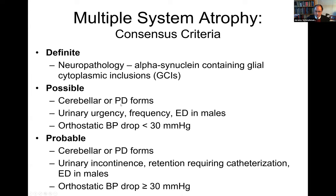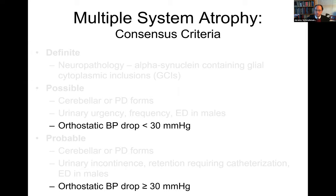Possible MSA is either ataxia or Parkinsonism with urinary urgency or frequency — running to the bathroom more frequently but still having bladder control — or erectile dysfunction early in men, and a blood pressure drop of less than 30 mmHg from lying to standing. Probable MSA has the same ataxia or Parkinsonism, but now the bladder doesn't work — either incontinence, no control, or retention requiring catheterization and erectile dysfunction — and a blood pressure drop of greater than or equal to 30 mmHg. Blood pressure is really important for the diagnosis of possible or probable MSA.